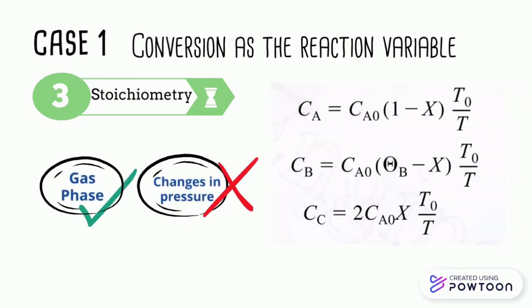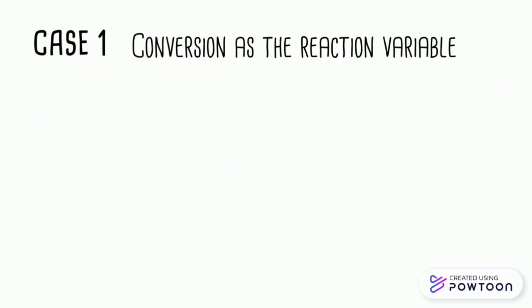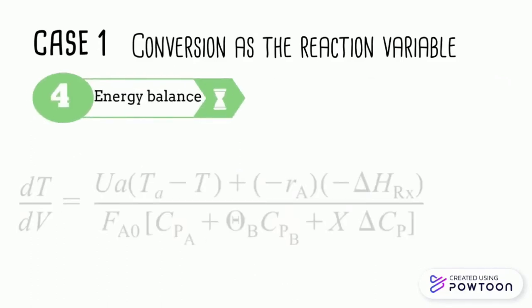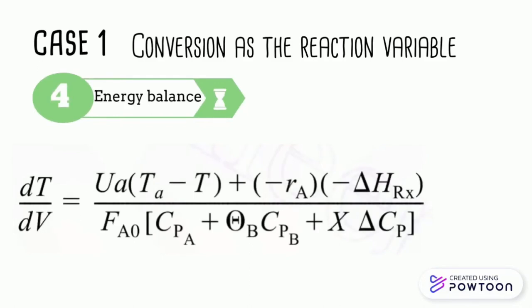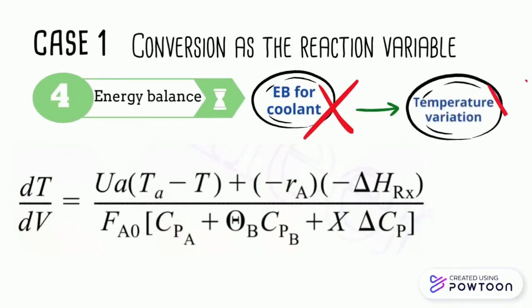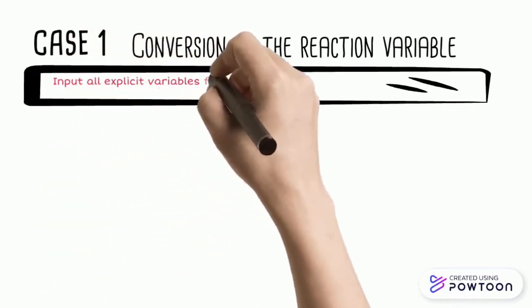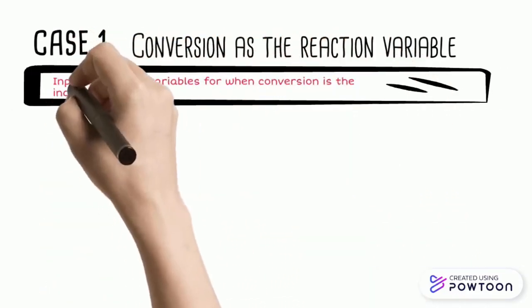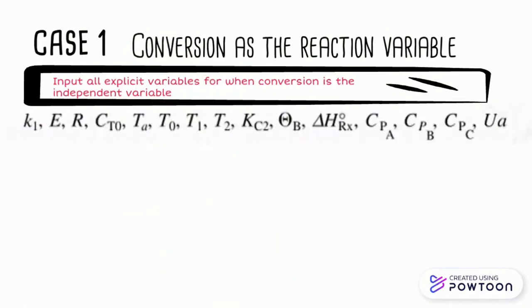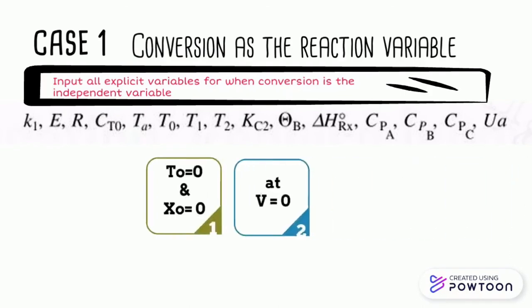Finally, we need to find the energy balance. The energy balance for the coolant is neglected as there is no variation in its temperature. After inputting all explicit variables for when conversion is the independent variable, with the initial values T0 and X equals zero at V equals zero, and final values of VF, a sample graph can be plotted.